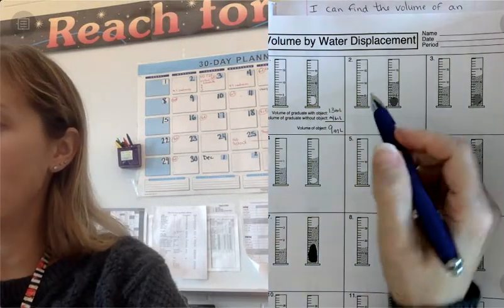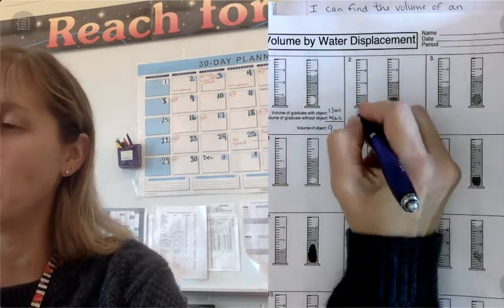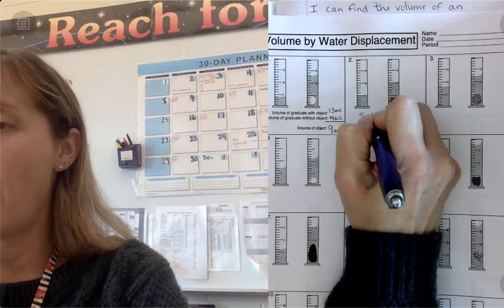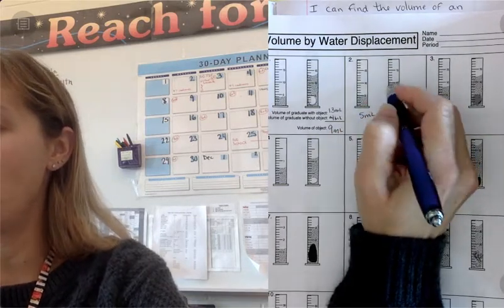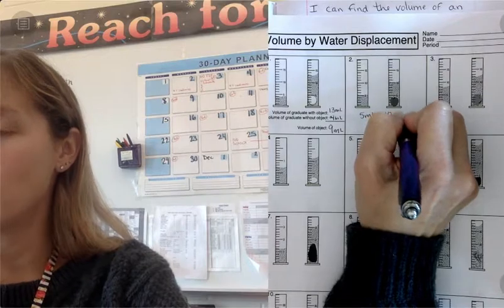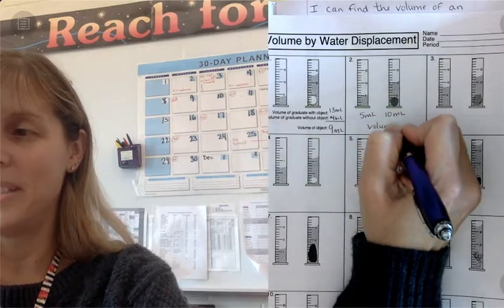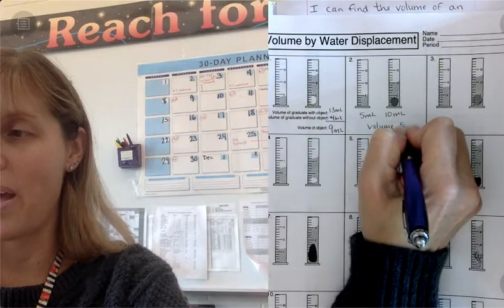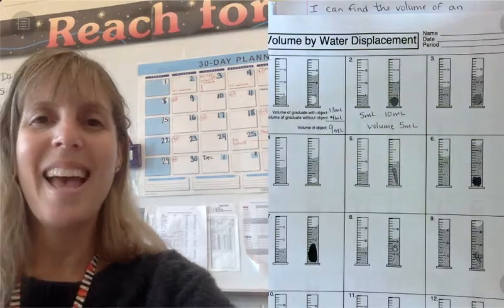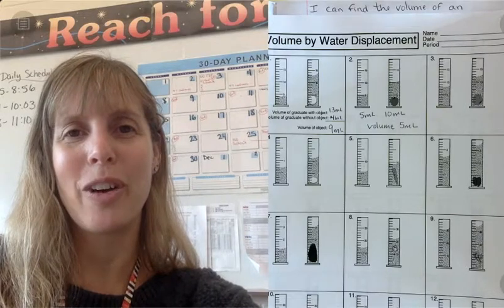To do number two, if we look carefully, we have 5 milliliters. After the object is put in, we have 10 milliliters. So our volume is 10 subtract 5 is 5 milliliters. You get to do the rest and you get to submit them on a Google form for credit.